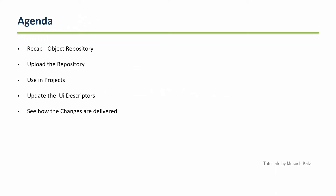Today in this video we are going to see a quick recap of the object repository. We are going to create a repository, upload it to the orchestrator, then create a new project that uses the repository from the orchestrator. Then we are going to update the UI descriptors and see how these changes are delivered to the projects which are using the existing repository.